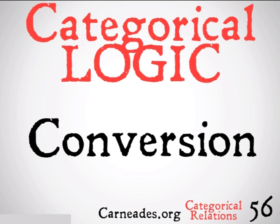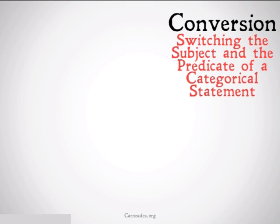Now, conversion is allowed on E or I statements, but not on A or O statements. Let's take a look at why. Conversion is switching the subject and the predicate of a categorical statement.